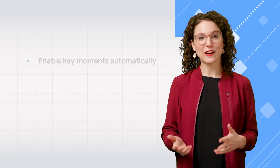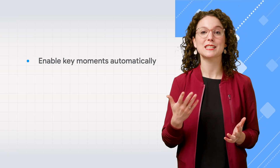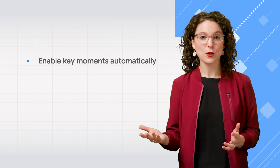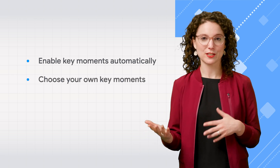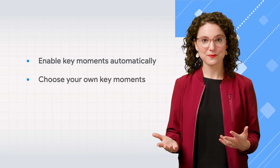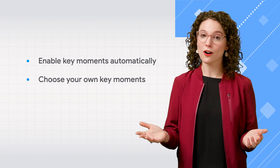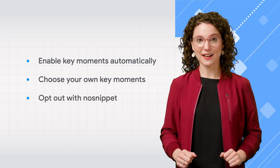Now that you've seen key moments in action, let's talk about how to enable them for your videos. With the right setup, Google can automatically identify and display the key moments in your video. Or you can choose to manually label the key moments yourself. If you don't want key moments at all, you also have the option to opt out using the no snippet tag.